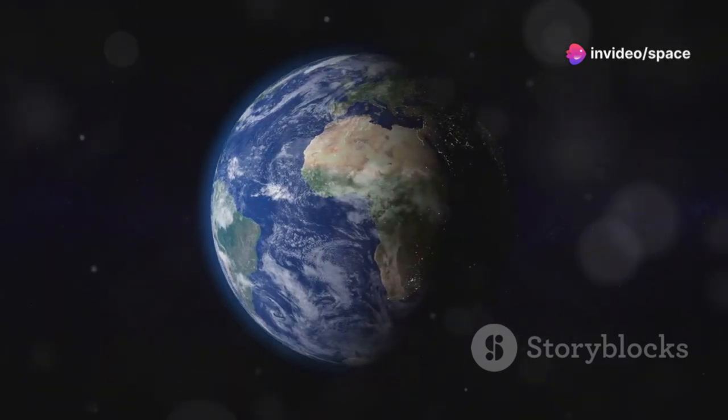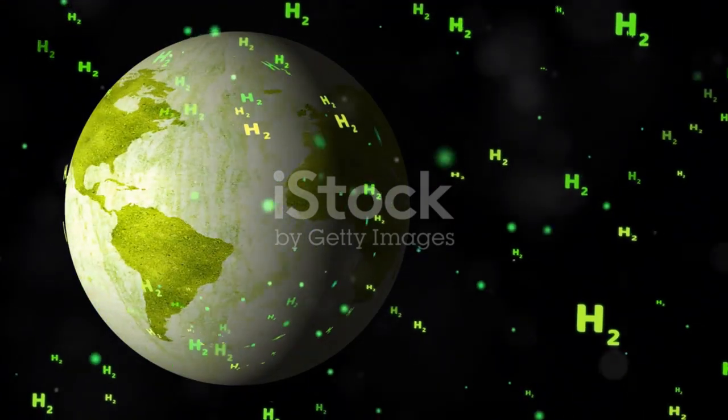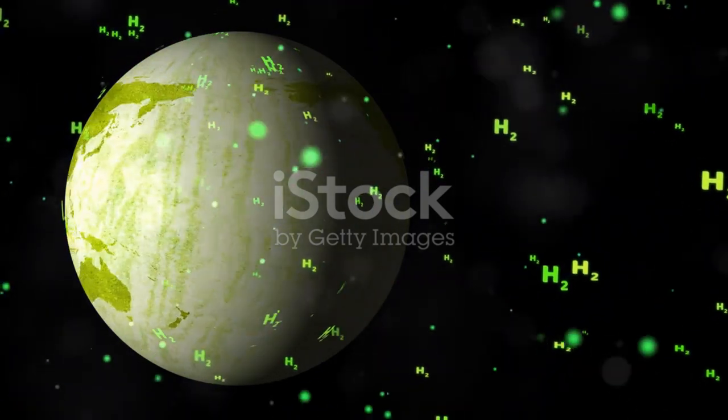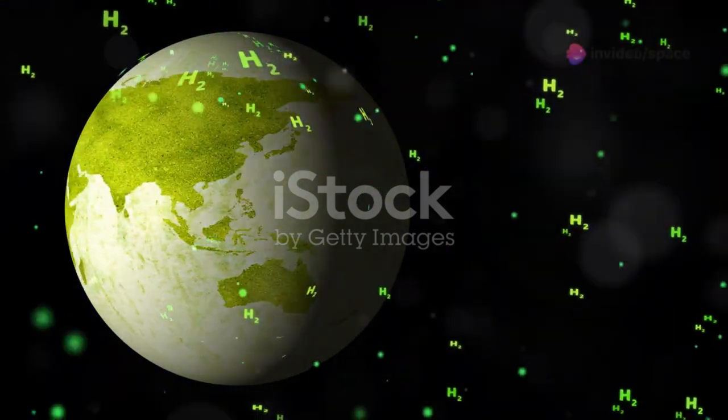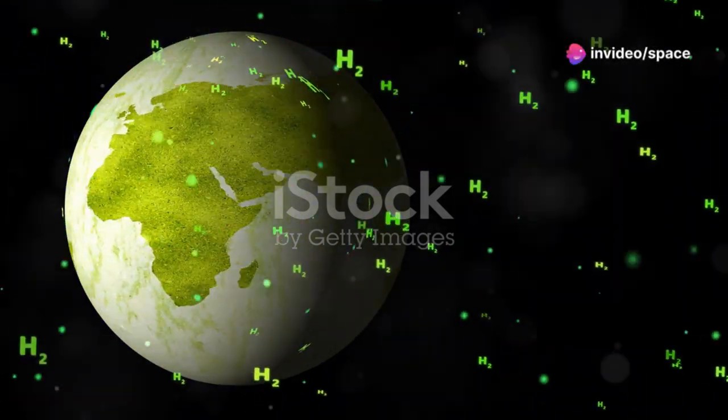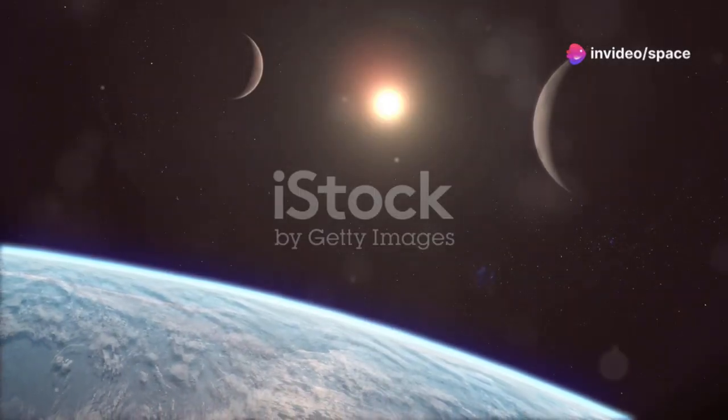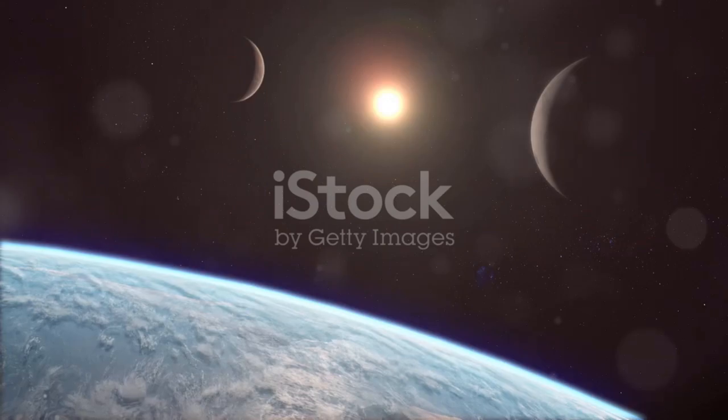If Proxima b has an atmosphere capable of such heat distribution, it opens up the possibility for life to exist in this twilight zone. The unique conditions could foster the development of life forms adapted to the constant twilight, creating an ecosystem unlike any we have seen before.